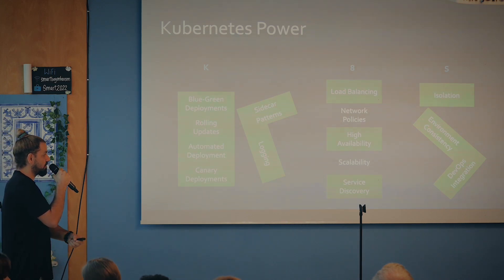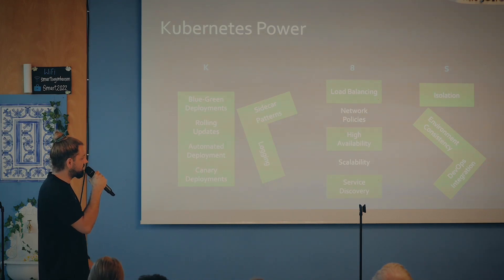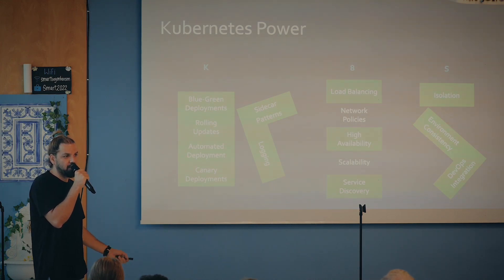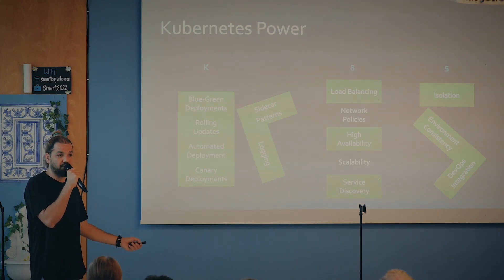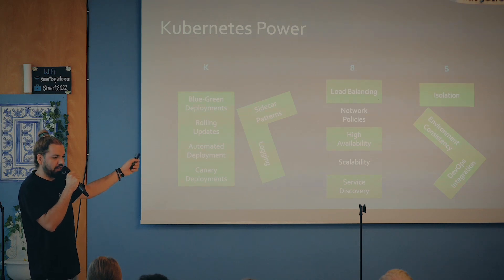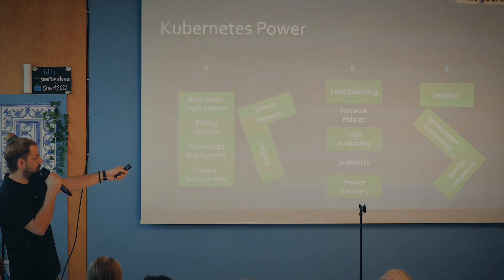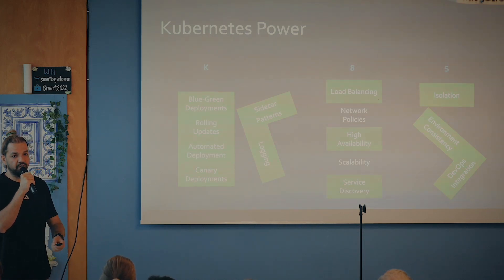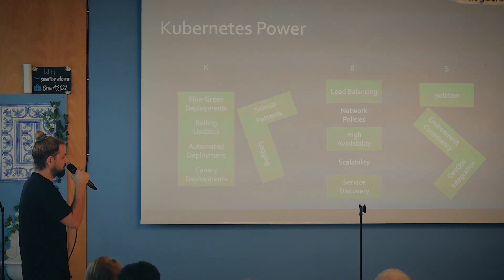In the center, you can see load balancing — we just talked about it. Let's say the HR app doesn't like to talk to the accounting app, so we can do it with network policies — it's like a firewall in Kubernetes. High availability: you can have 10 of the HR applications in one cluster, so if one goes down, you can rely on the others. In peak times, like eight o'clock, an app that needs more load can scale automatically. Every service comes up and announces itself — Kubernetes knows where to route the traffic. Service discovery, isolation, and environment consistency come with containerization itself. And DevOps integration: everything you do is a YAML file — configuration as code, infrastructure as code — so you can integrate it with DevOps practices.